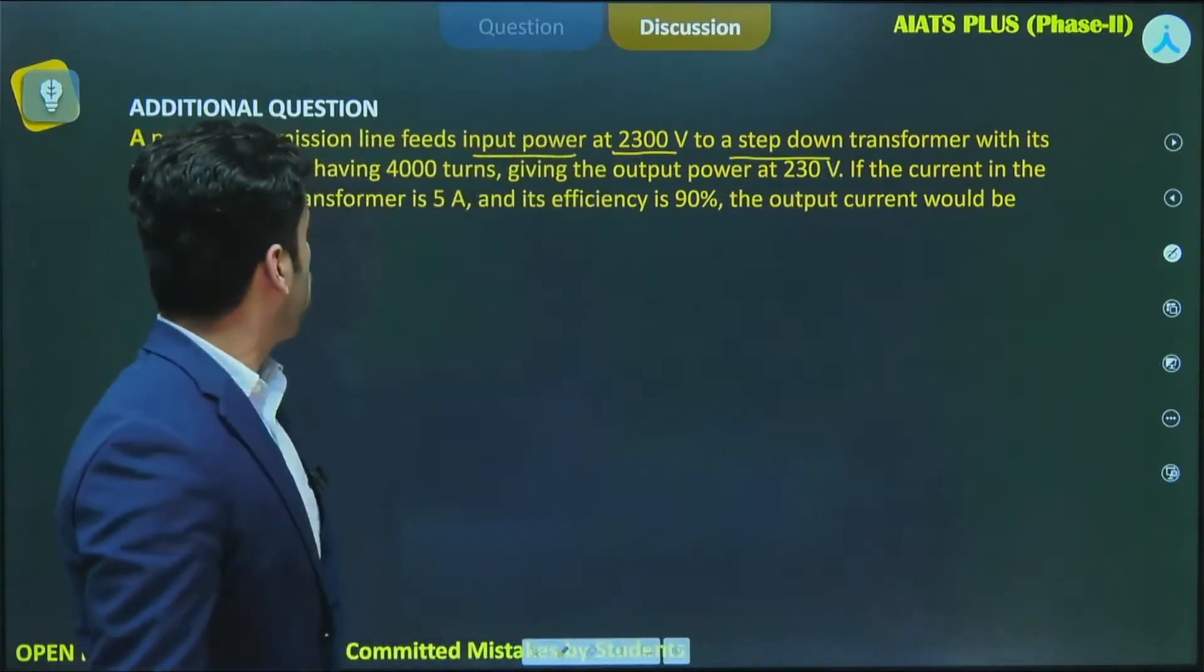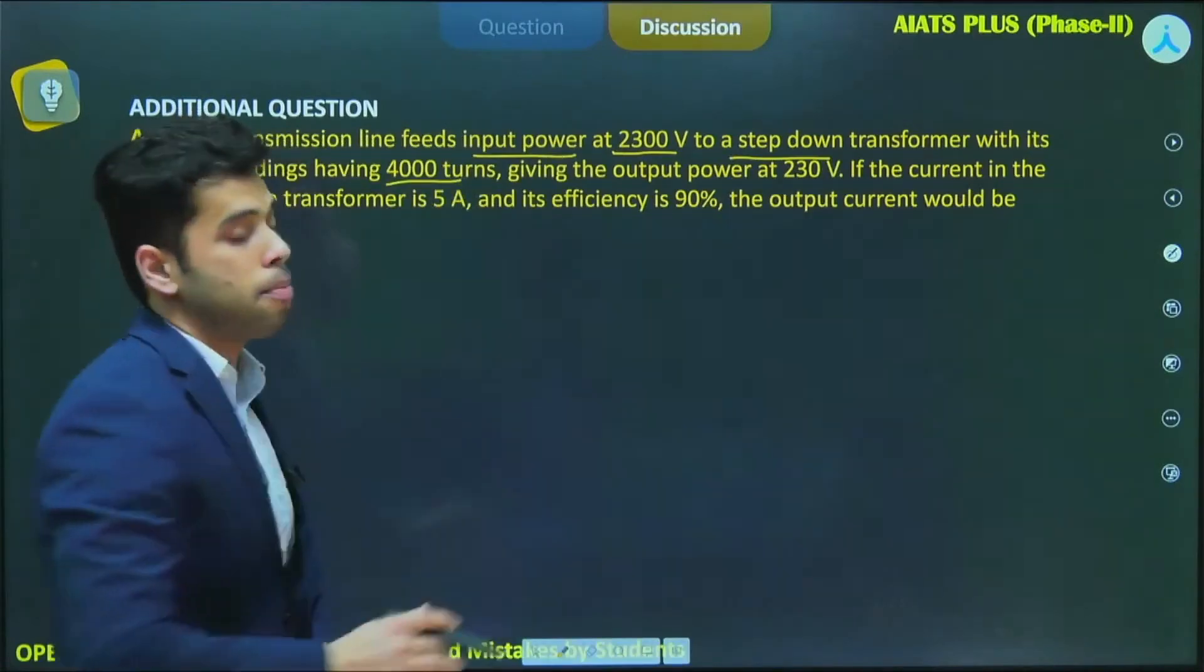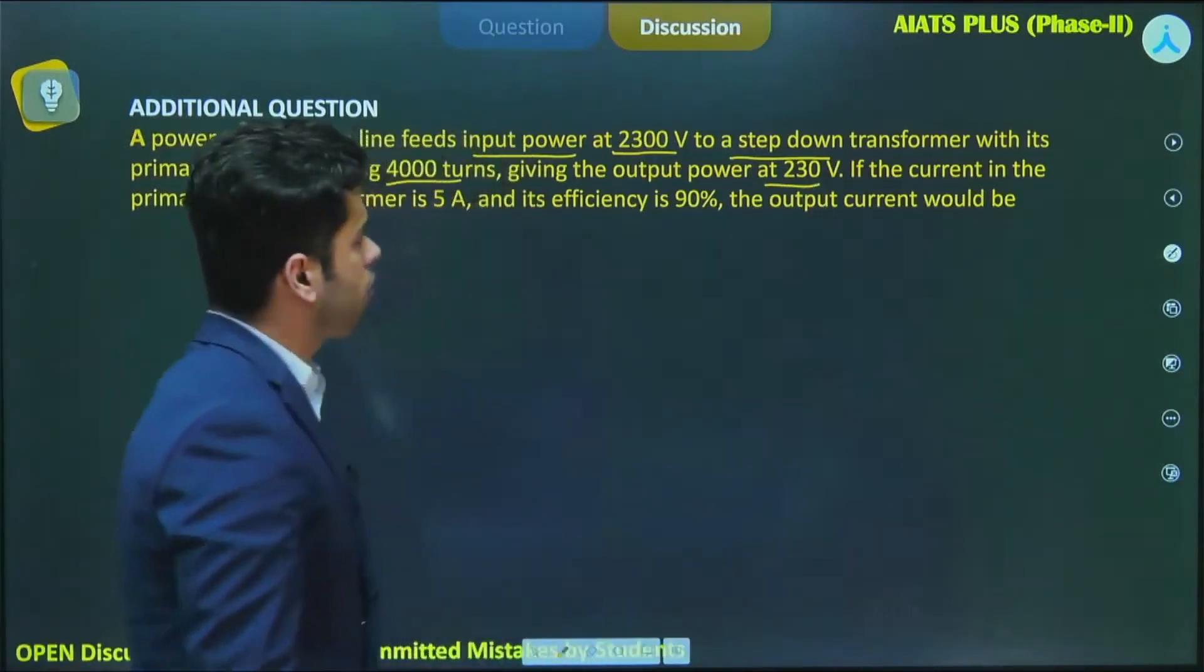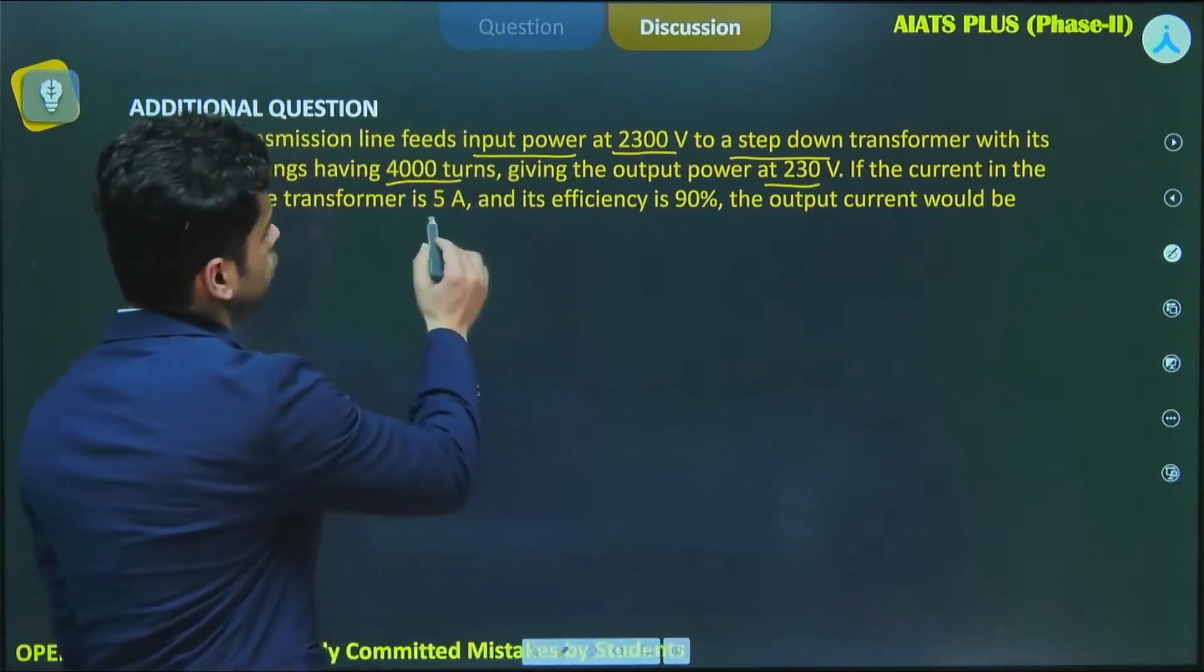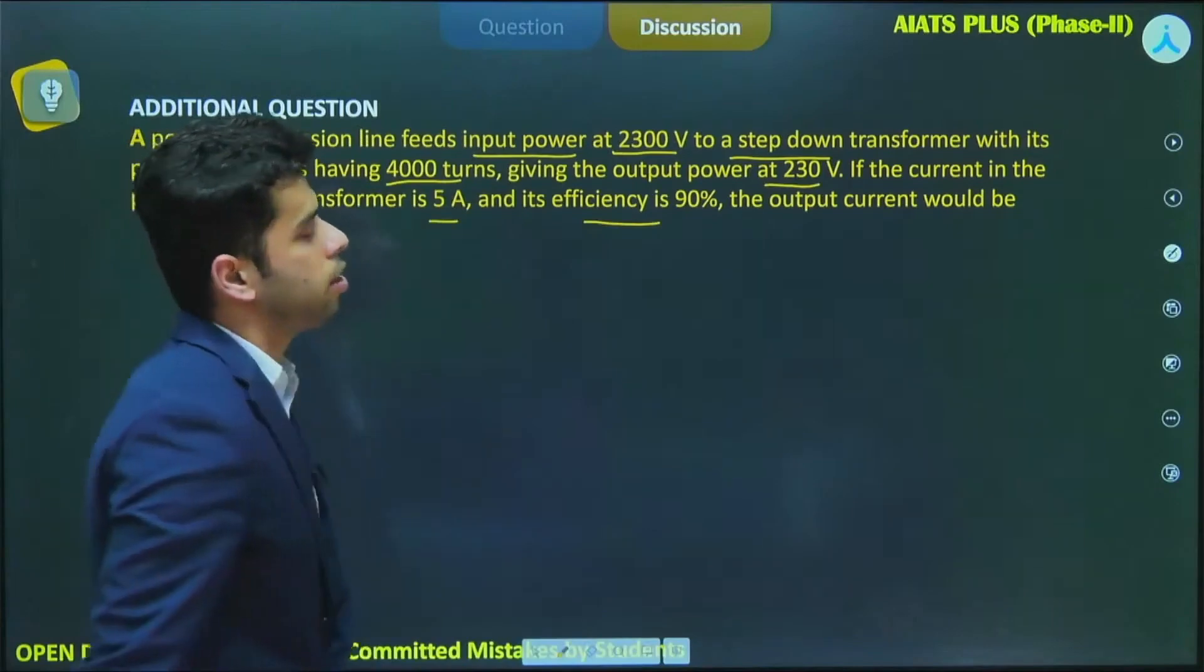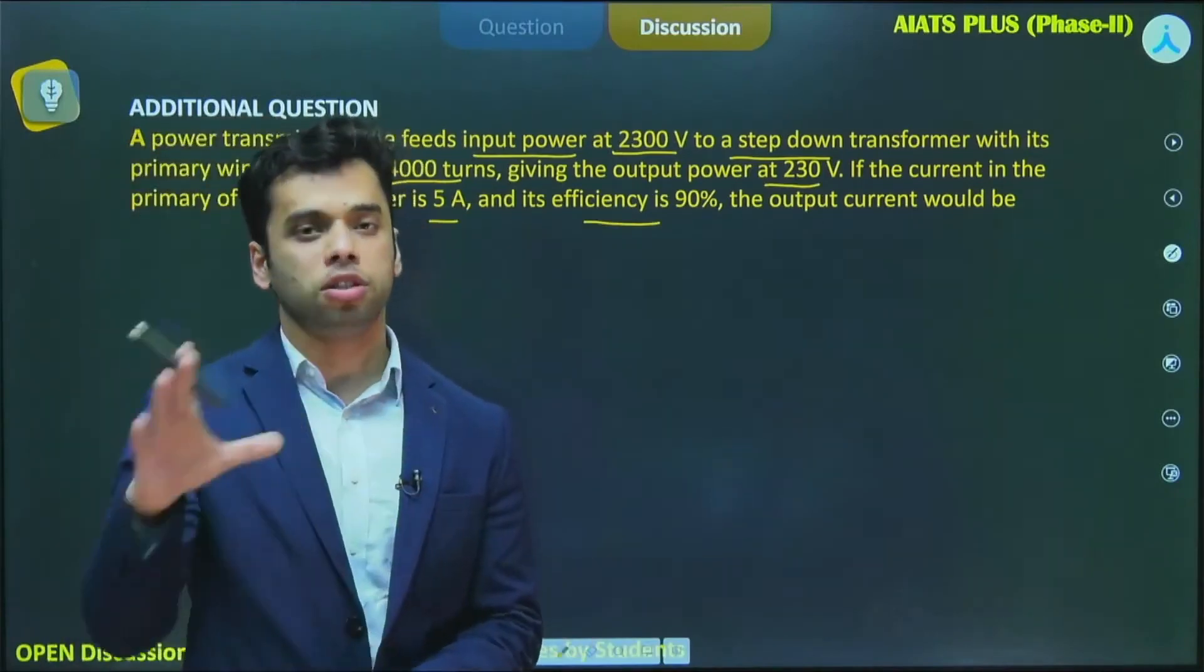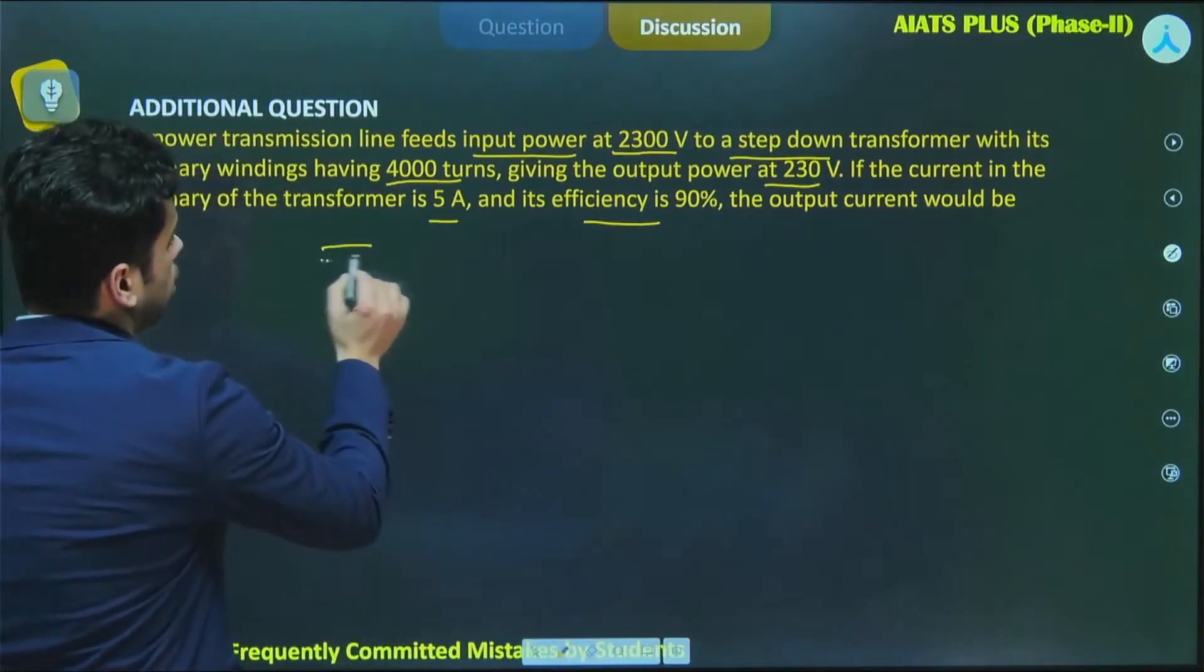The primary winding has 4000 turns, giving the output power at 230 volt. If the current in the primary of transformer is 5 ampere and its efficiency is 90%, then you need to find the output current. This problem tests all the concepts.